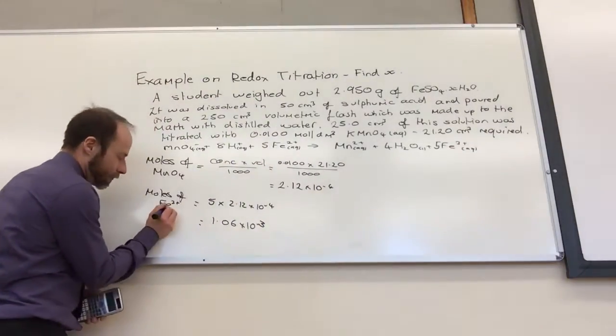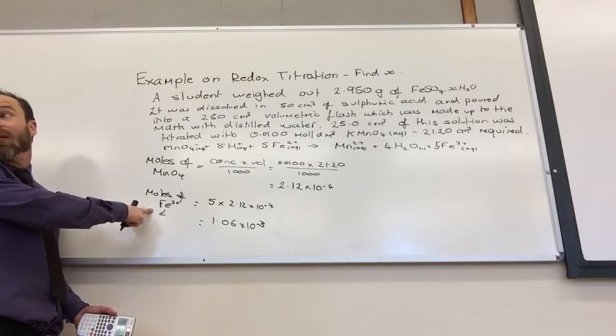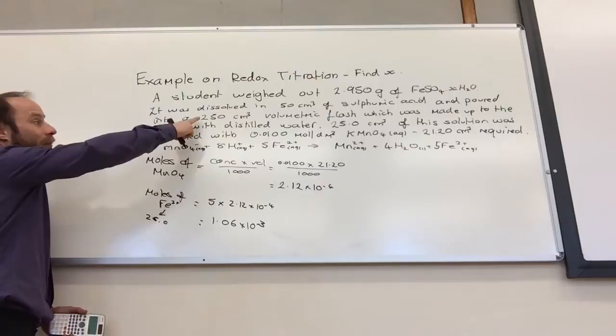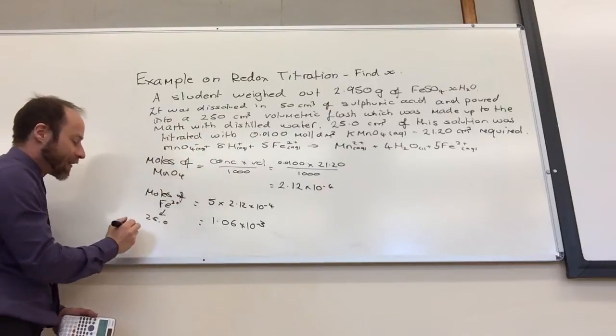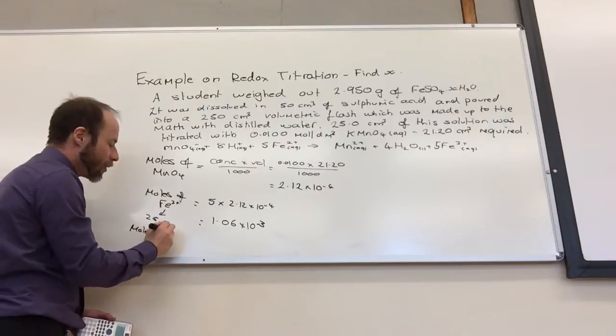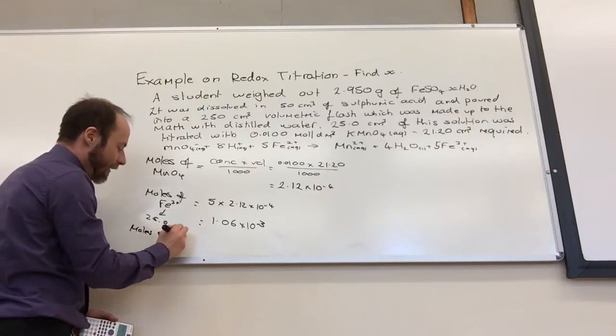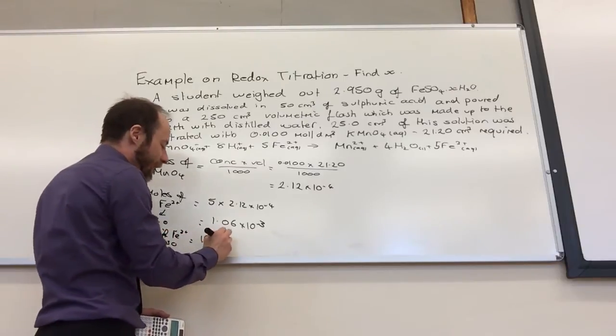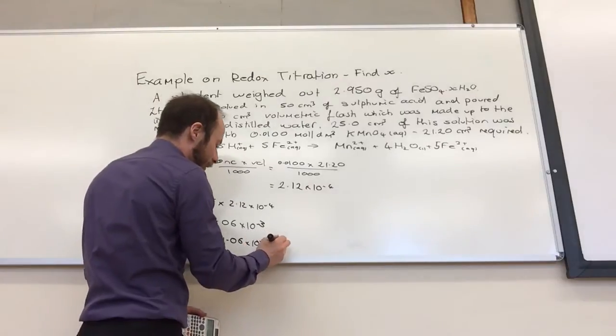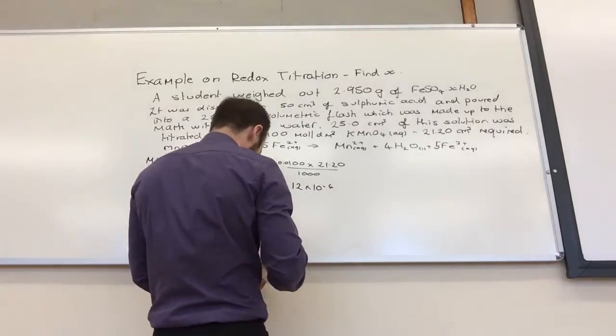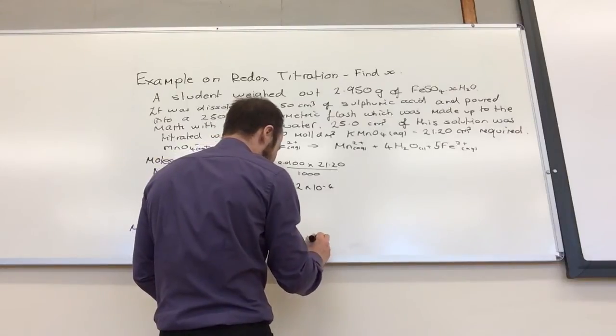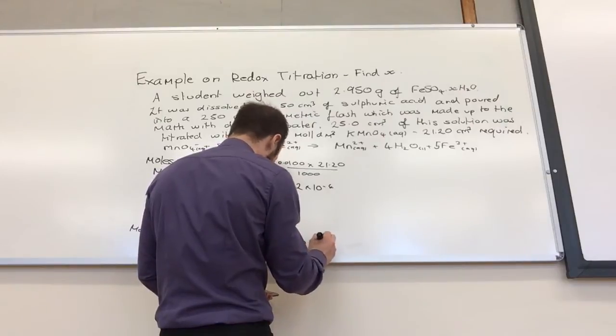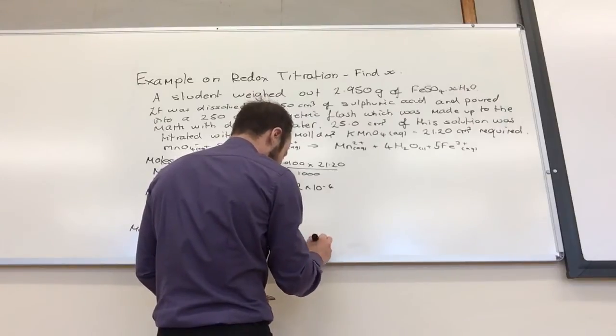That was in... That was in... What volume was that in? 25. That was in 25. What was the original? 250. So, what do I need to do that to find moles? Yeah. So, moles of Fe²⁺ in 250 is going to equal 10 times 1.06 times 10 to the minus 3, which, strangely enough, equals 0.0106.